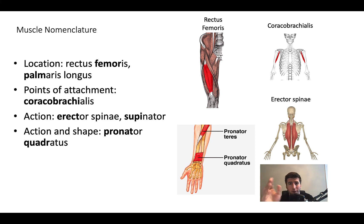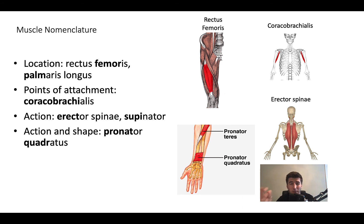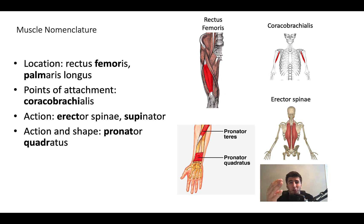I was looking at pronator as I was doing that — let me correct myself. Supination is palms forward. Pronation is palms down. So action and shape would be pronator quadratus — it's going to cause pronation, so palms down, and it's called quadratus because it is shaped like a quadrilateral. Kind of cool.